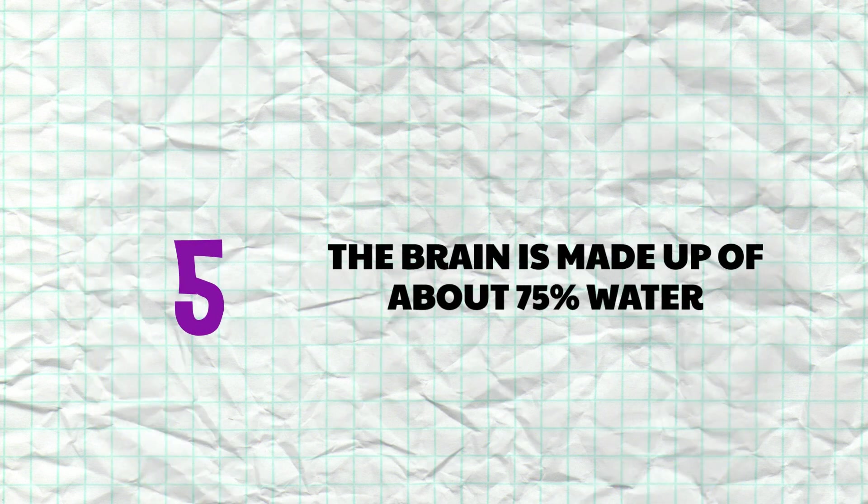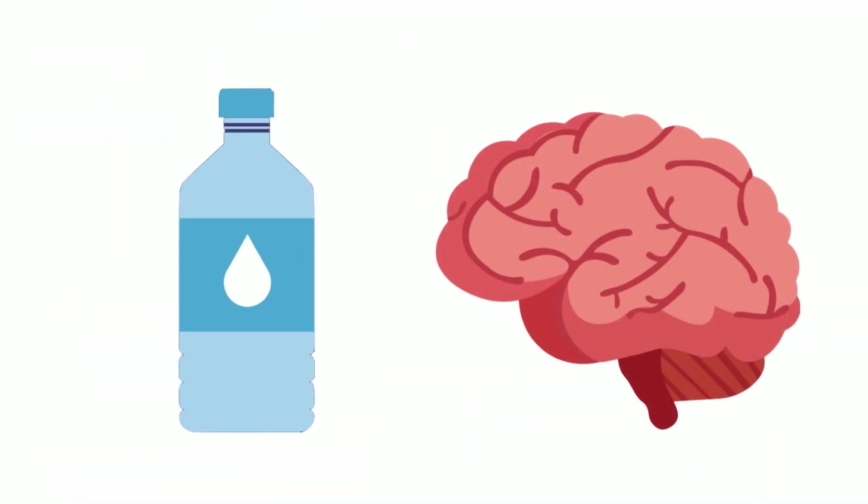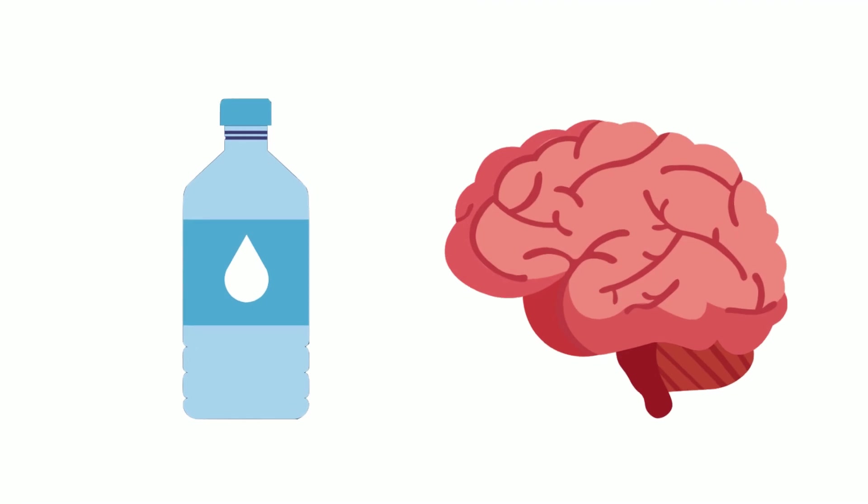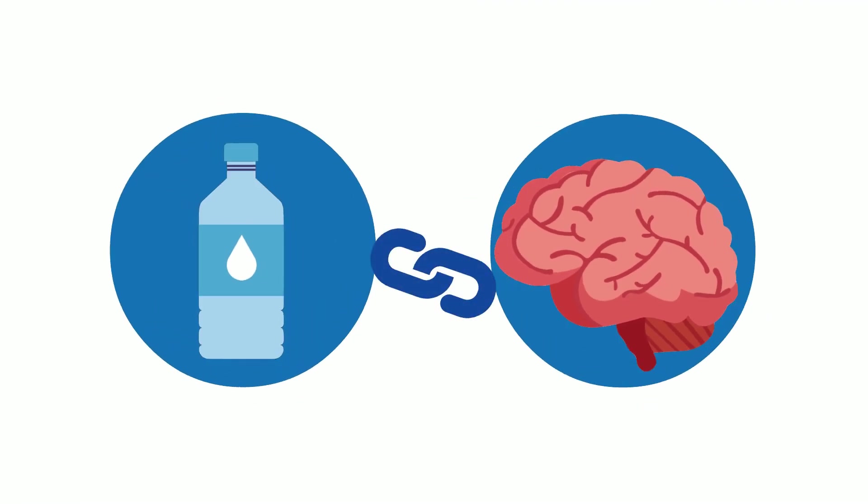Number 5: The brain is made up of about 75% water. Water plays a very important role in our brain. As such, drinking water and brain functions are integrally linked.